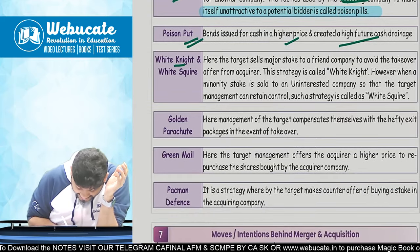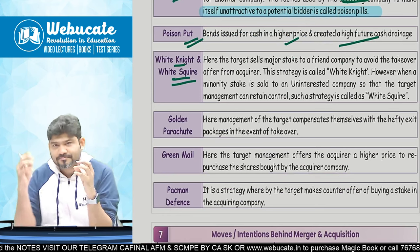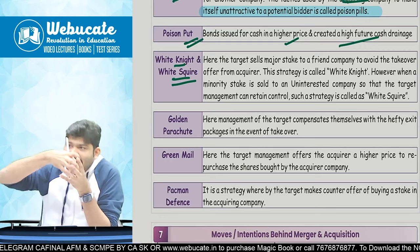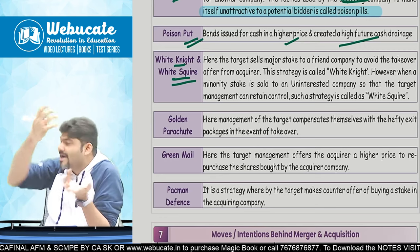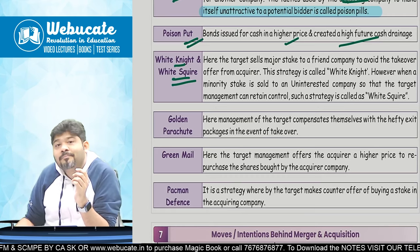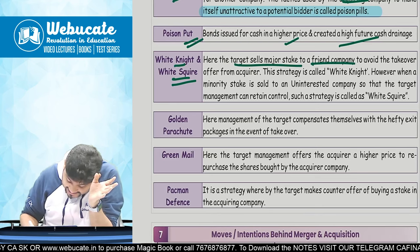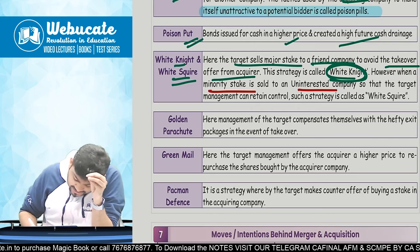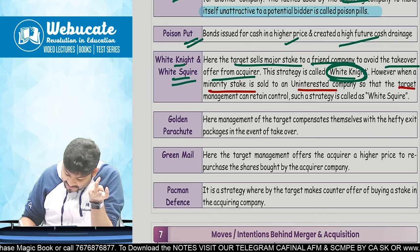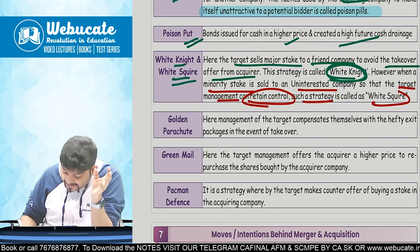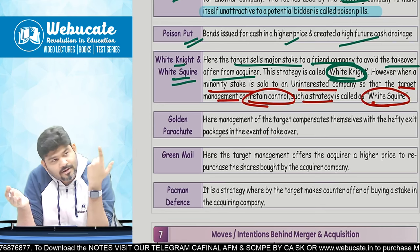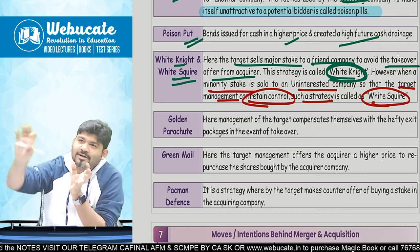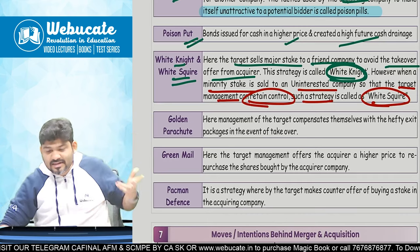Then is White Knight and White Square. If an acquirer is planning to take over the target but the target doesn't want to be acquired, it will sell a major stake to a friendly company before the acquirer can — that is White Knight. However, when a minority stake is sold to an uninterested company so that target management can retain control, it is called White Square — sell and then repurchase the stake back once the acquirer goes away.